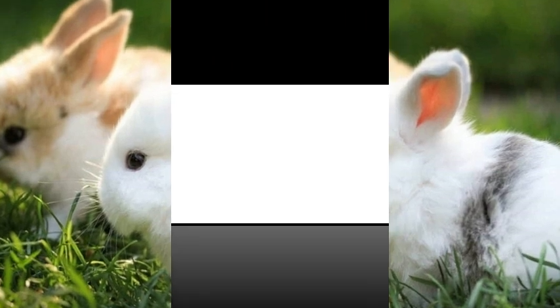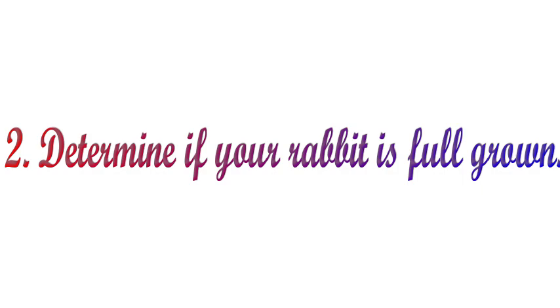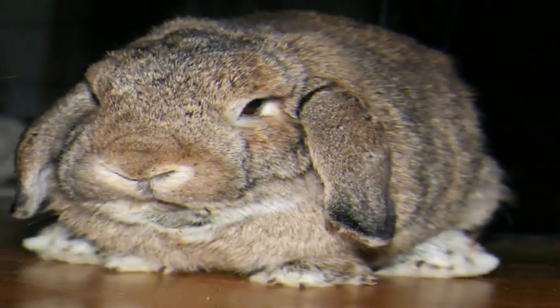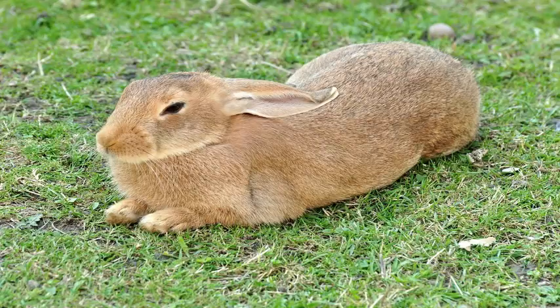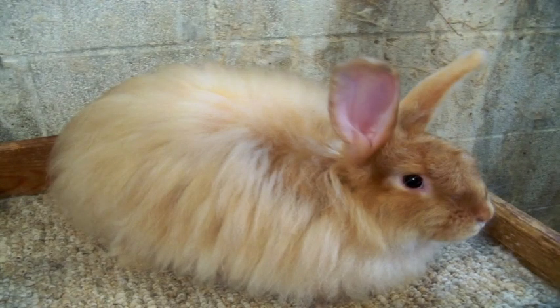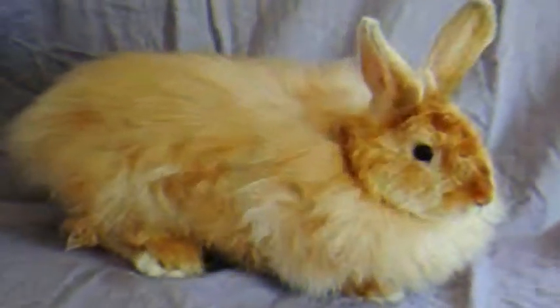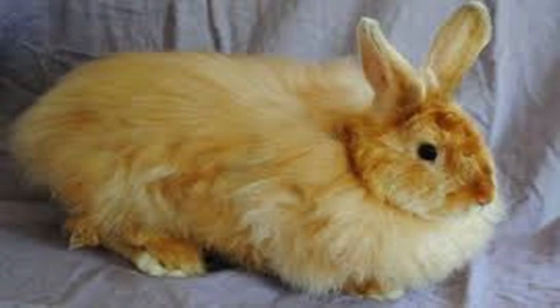To determine if your rabbit is full grown, you need to know how big your breed of rabbit should be when fully grown. If you are uncertain whether you have a small breed adult or a young rabbit still growing, take weekly photographs of the rabbit and compare the pictures — include the same object each week as a reference. Depending on the breed, rabbits continue to grow until they are six to nine months old, with the top of the range for larger breeds.